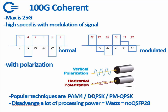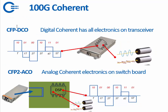These techniques are called PAM4, DQPSK, or PM-QPSK. For the 100 gig coherent, modulation and polarization are used together to achieve 100 gig. The disadvantage is you need a lot of processing power — a lot of watts — and this cannot be achieved with the QSFP28 right now. Nowadays we see this in a CFP DCO, where the modulation and polarization technique is built into a CFP — it's called digital coherent and has all the electronics inside the transceiver. You also have a CFP2 ACO, called analog coherent, which has the digital signal processing chip on the main board of the router or switch, so the optic itself doesn't have that electronics — it needs a board with a DSP chip.